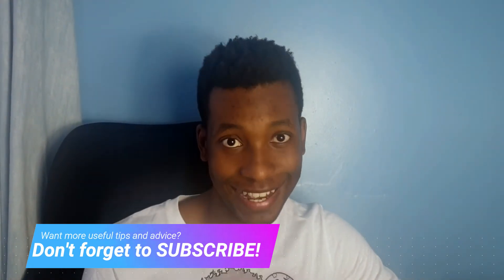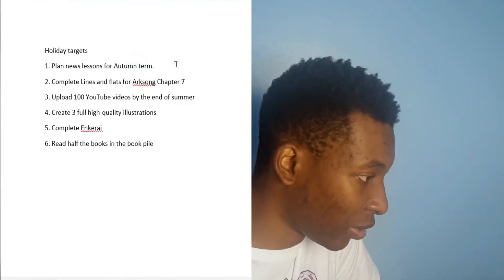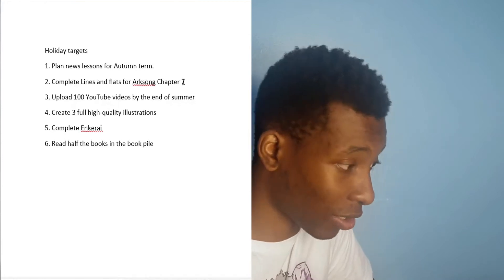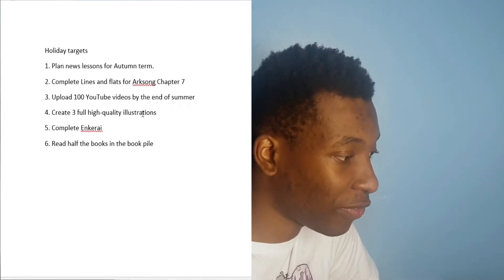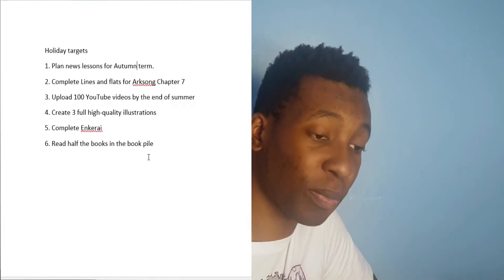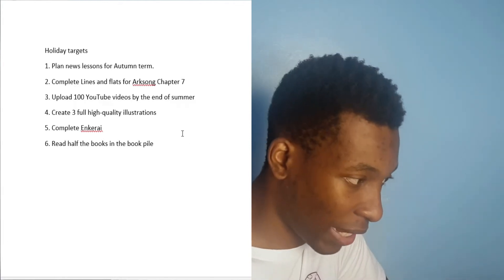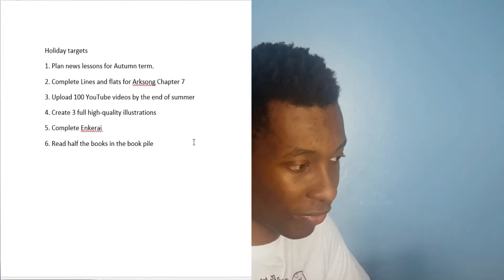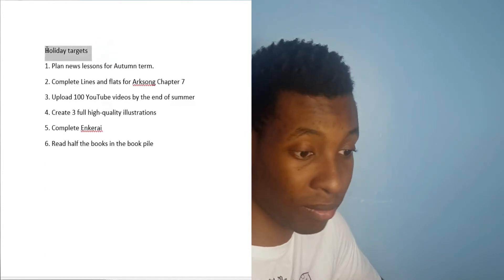So I figured out this brilliant tactic instead. At the beginning of the holiday period, I lay out a set of goals which I hope to reach by the end of the holiday. Here are some examples of my current goals: one, plan new lessons for autumn term; two, complete lines and flats for arcs on chapter seven — that's a comic; three, upload 100 videos by the end of summer; four, create three full high-quality illustrations; five, complete Anchor Eye; and six, read half the books in the book pile. There are a few more I'm not sharing as they're not public-facing. You can see evidence of these on my Instagram, Facebook, or YouTube.